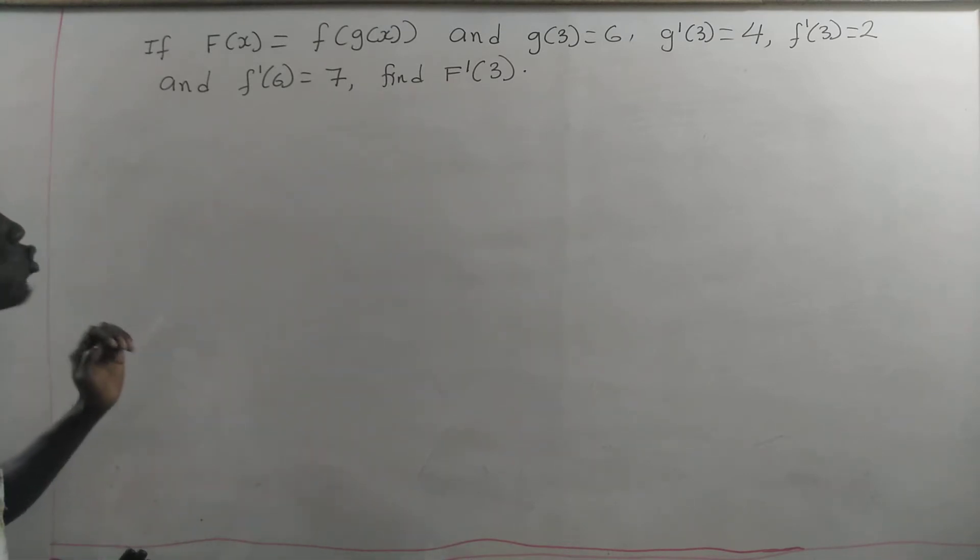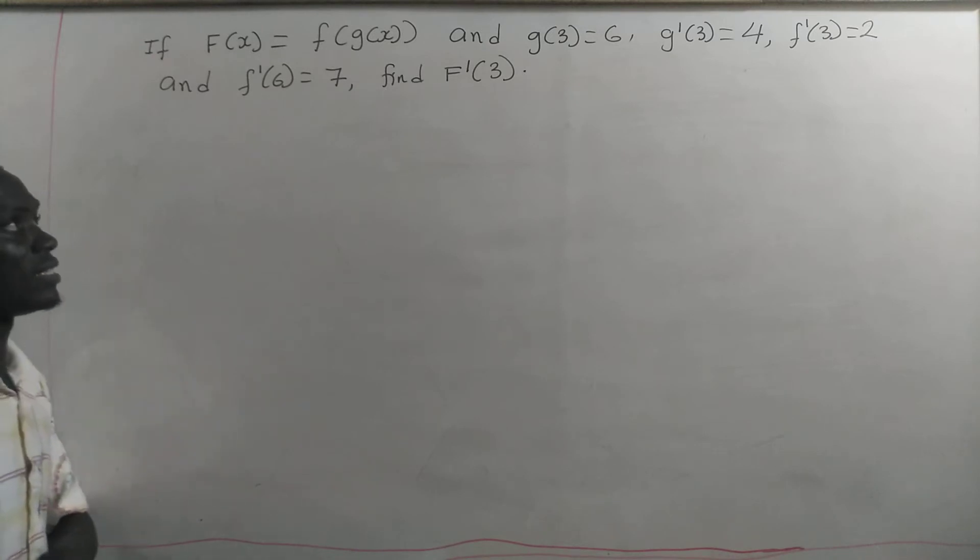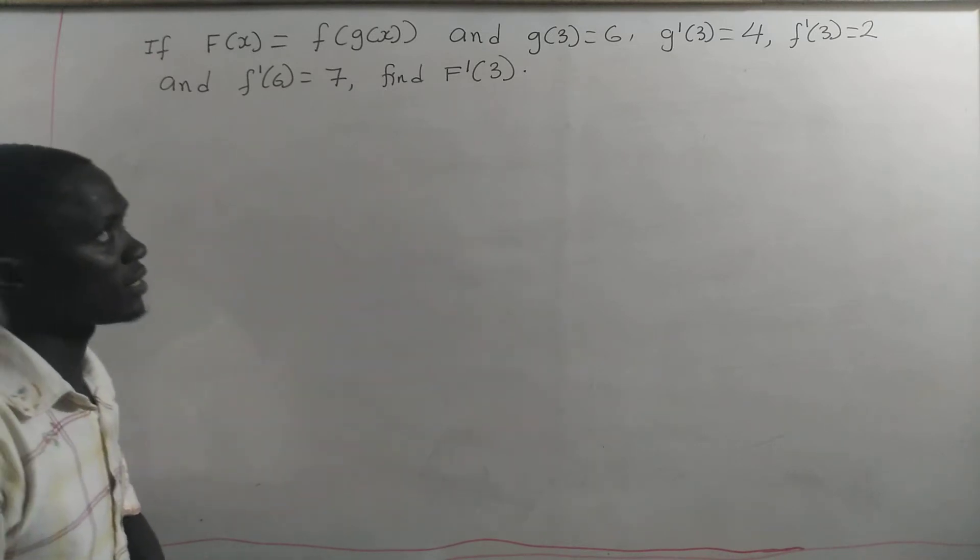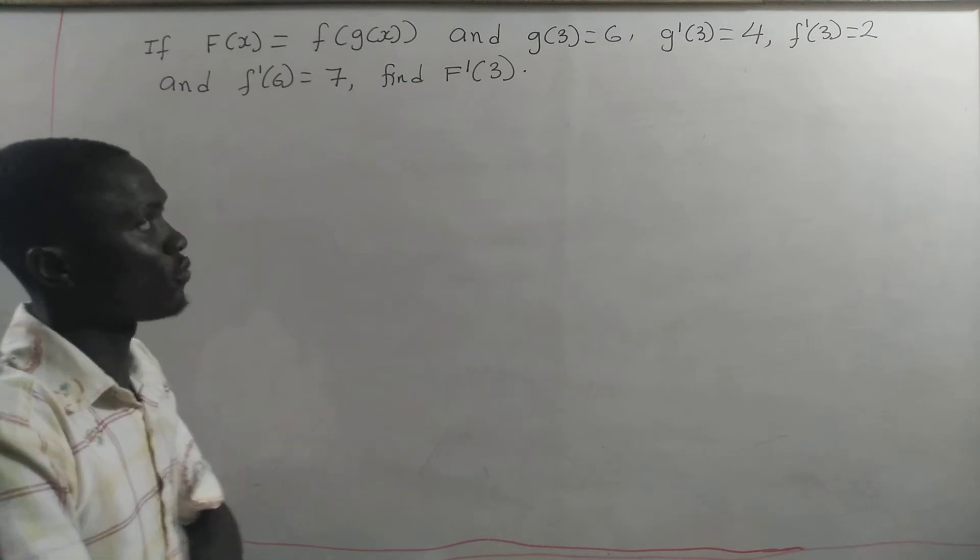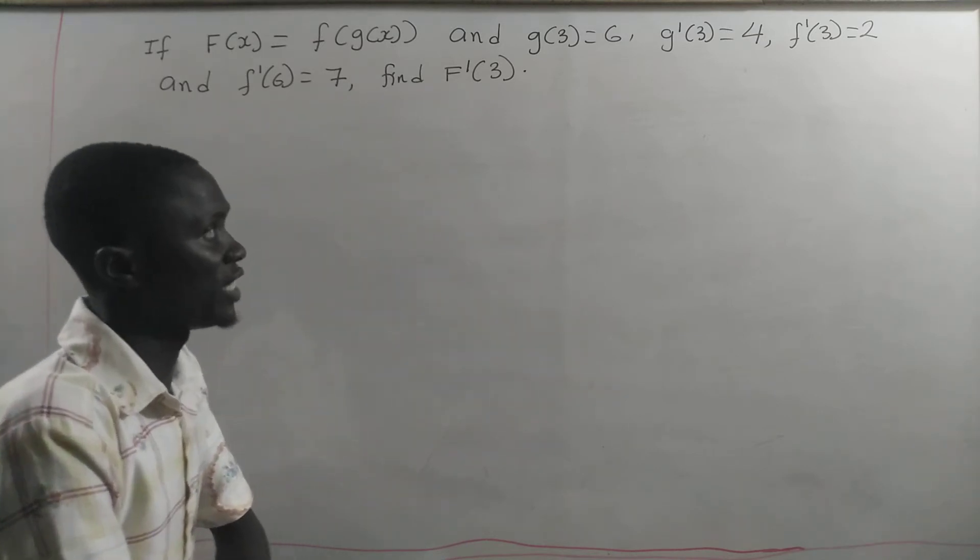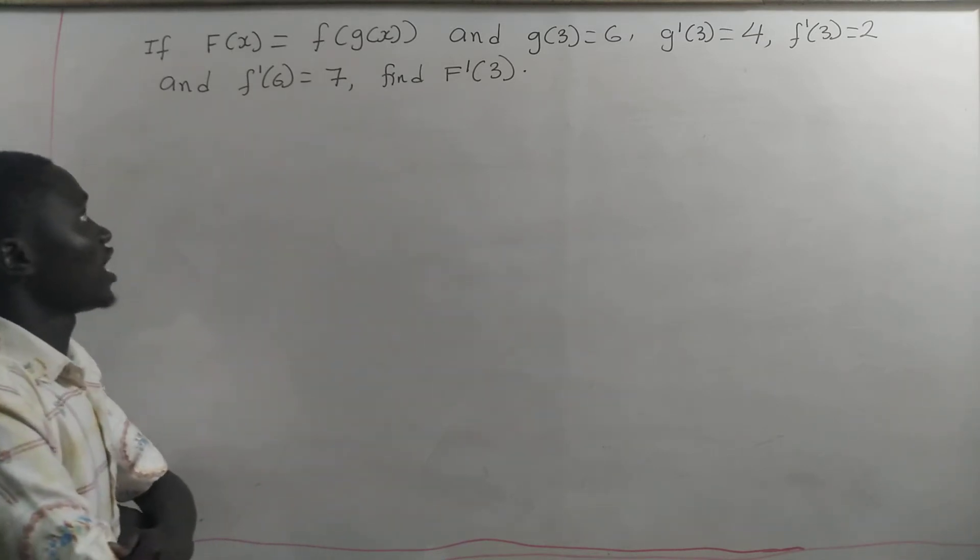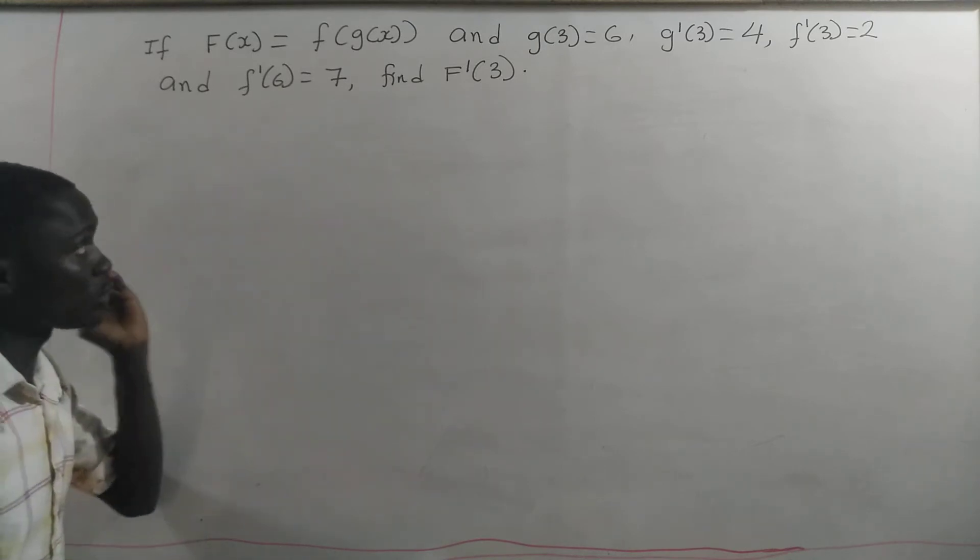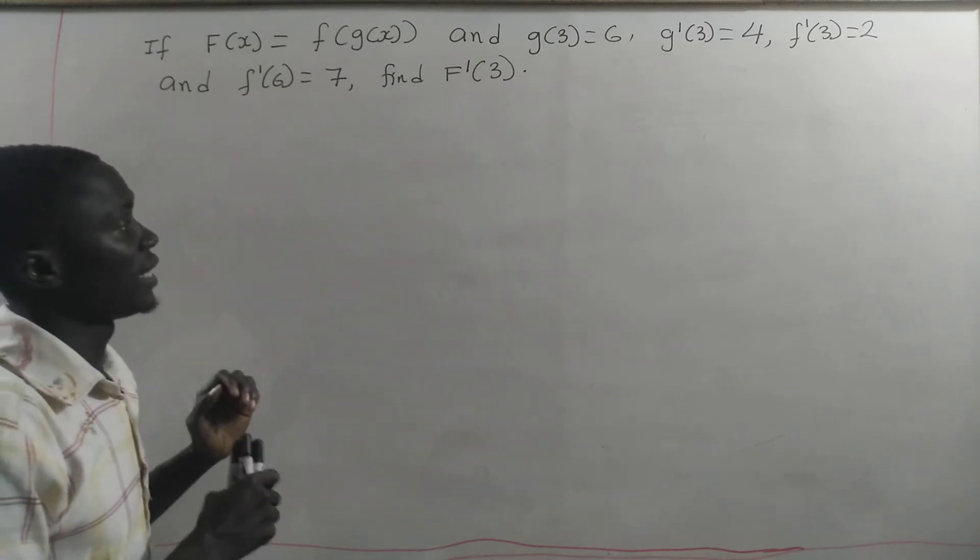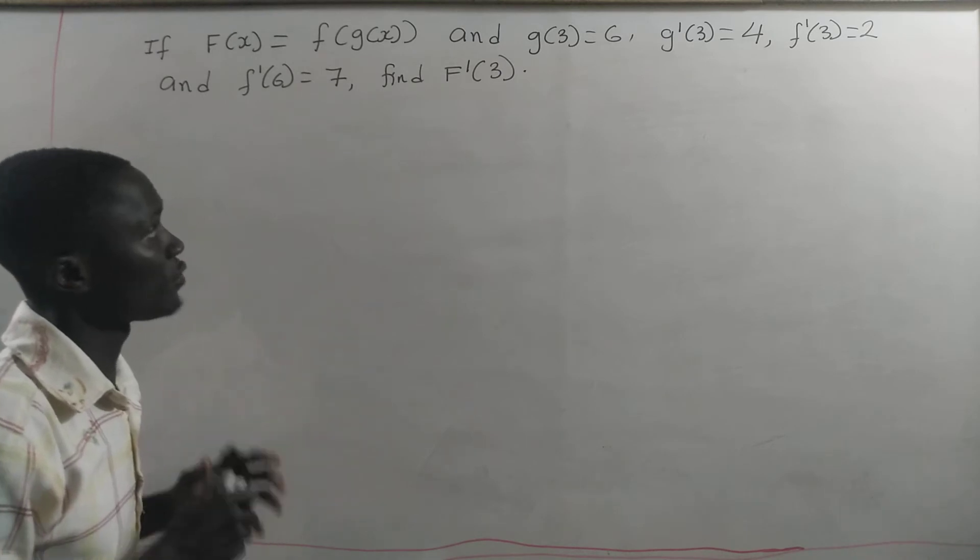If F(x) equals f of g of x, and g of 3 equals 6, g prime of 3 equals 4, f prime of 3 equals 2, and f prime of 6 equals 7, we have to find capital F prime of 3.